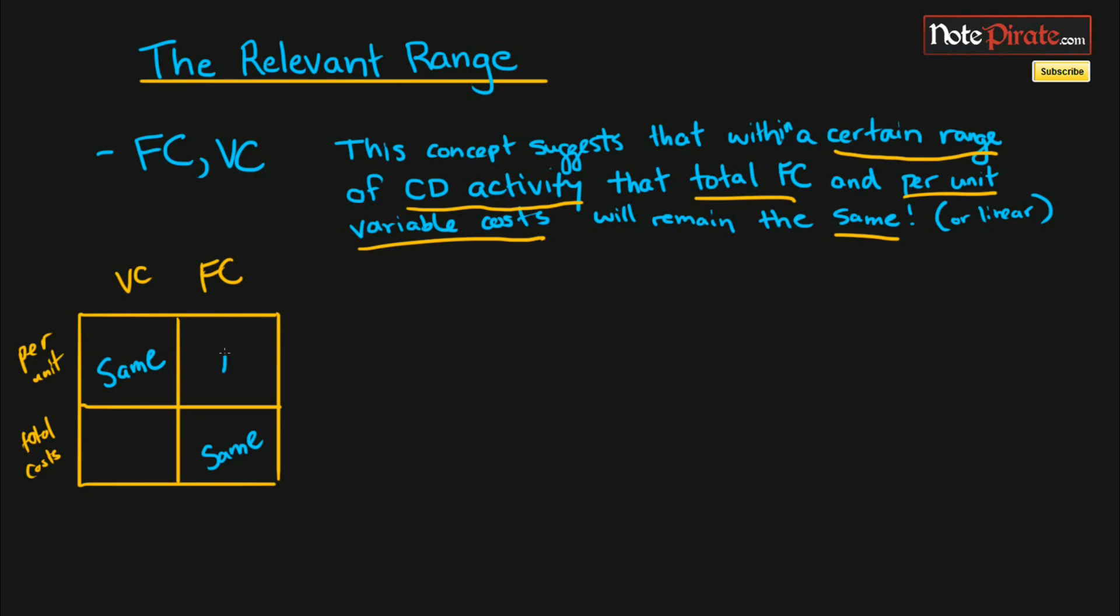What changed were the fixed costs per unit and the total cost of variable costs. So these same figures, the variable cost per unit and the total fixed costs, will remain the same as long as we're in the relevant range or a certain range of cost driver activity.